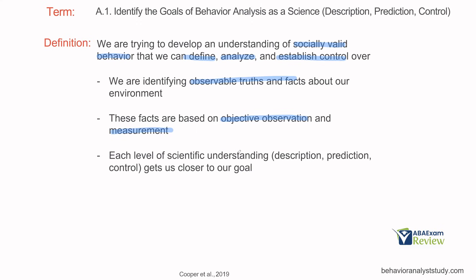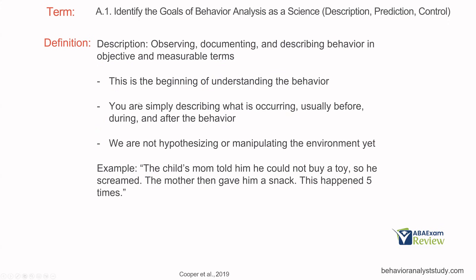Each level of scientific understanding is going to get us closer to our goal. We're going to be able to describe behavior, predict why it happened, and then through experimentation and manipulation, control that behavior to start to make meaningful change. Let's start with description. Description is the lowest level of scientific understanding where we're simply just saying what happened. We're observing the behavior, documenting the behavior, and just describing the behavior.